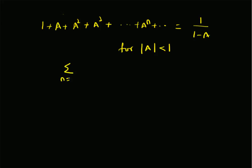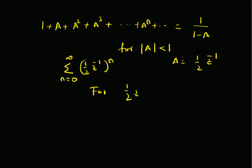So the summation from n = 0 to ∞ of (1/2 * z^(−1))^n corresponds to a = (1/2) * z^(−1). For |a| < 1, that is |1/2 * z^(−1)| < 1, the region becomes |z| > 1/2 — that is the entire z-plane outside the circle of radius 1/2.